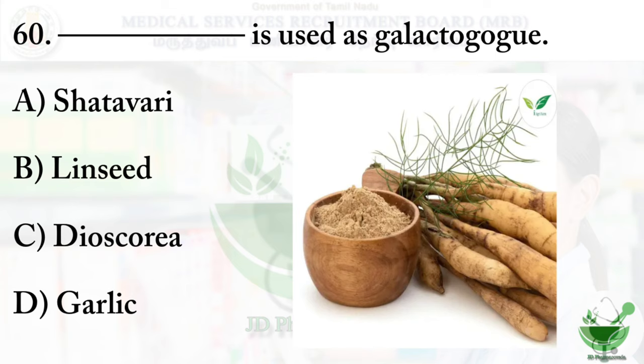Question number 60: Which drug is used as a galactagogue? A galactagogue is a substance that increases breast milk production in lactating women. The options are: option A, Satavari; option B, Linseed; option C, Dioscorea; and option D, Garlic. The right option is option A, Satavari.